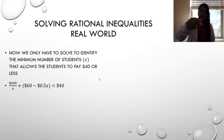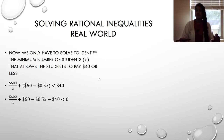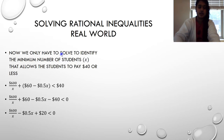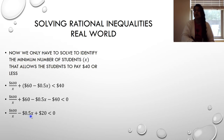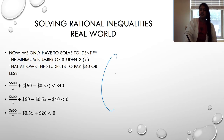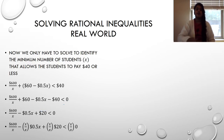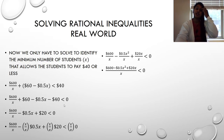Step one: I bring the 40 over to get a zero. I combine the $60 and −$40 into 20, giving 600/x + 20 − 0.5x < 0. I don't have one fraction yet, so I multiply through by x/(x) to get a common denominator of x. After multiplying and combining, I have one single fraction with a zero — step one is complete.